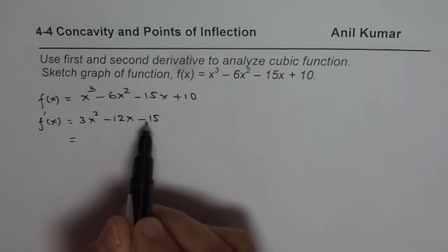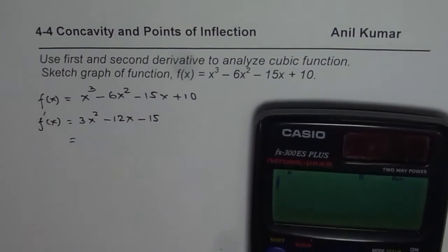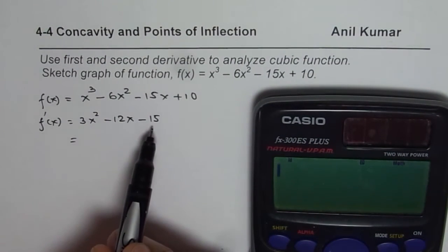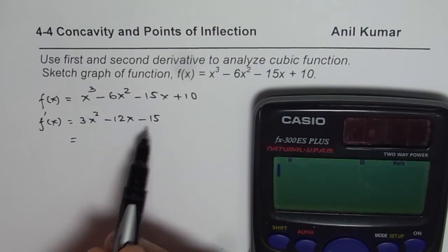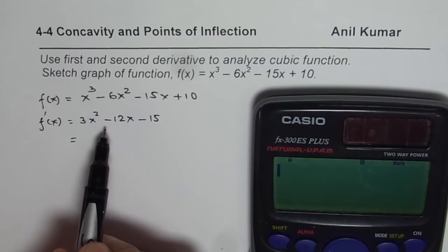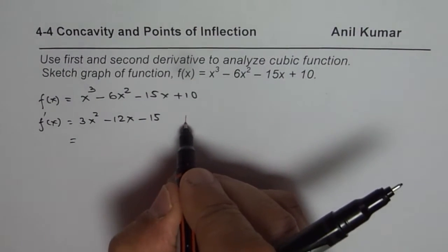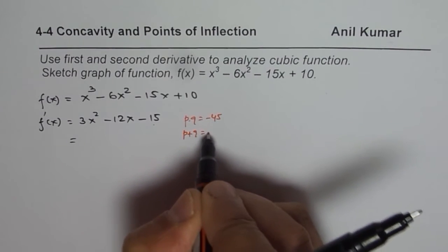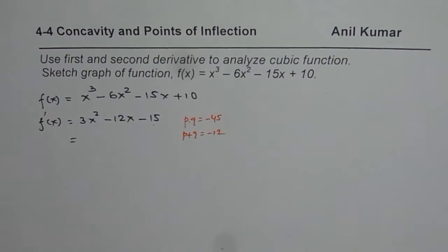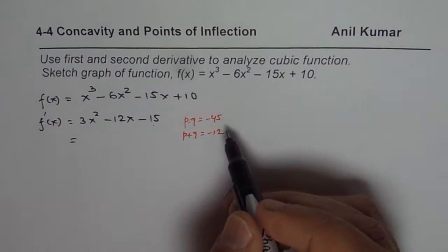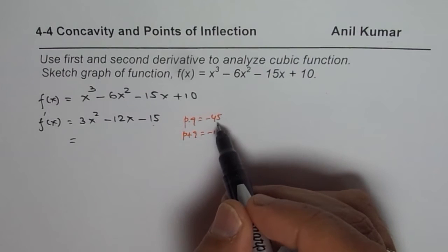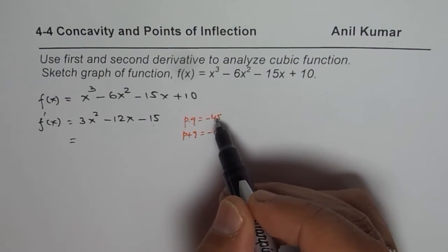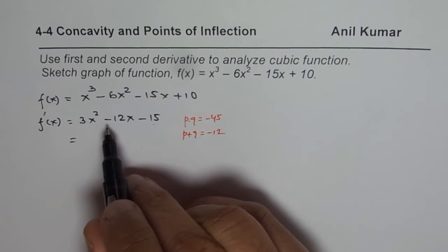So 15 times 3 is 45. We have a product of minus 45, and we are looking for two numbers whose product p×q equals minus 45 and whose sum equals minus 12. Now, 3 times 15 works for us — one of them has to be negative and the other positive, and the bigger number will be negative.